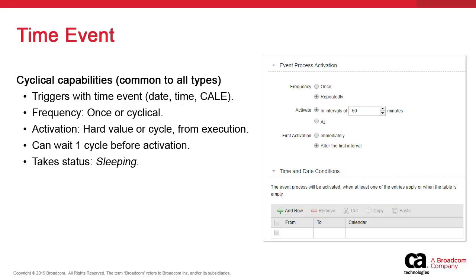Since the time event is the easiest to explain, we use it to show how these objects are designed and how script is used. Time-based events are simple. The object does not monitor anything; instead, it simply triggers when the system's clock matches one of the properties defined in Frequency, Intervals, First Trigger, Time Range, and Calendar. Note that all of these properties are also found in every other event type. The time event object just executes based on time, which can also be defined in all other templates.